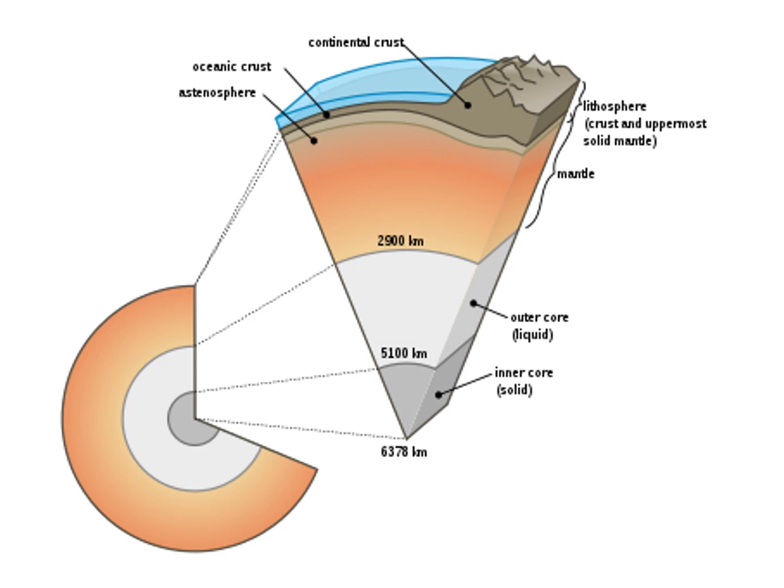This is a 3D diagram of the structure of the geosphere. The uppermost layer is called the crust, next comes the mantle, and finally the core. The mantle has two parts: the upper mantle, which is solid, and the inner mantle, which is liquid. The upper mantle as well as the crust consists of the lithosphere — the solid part.